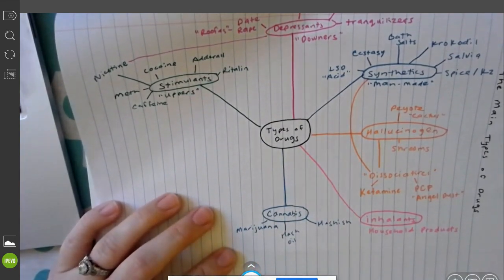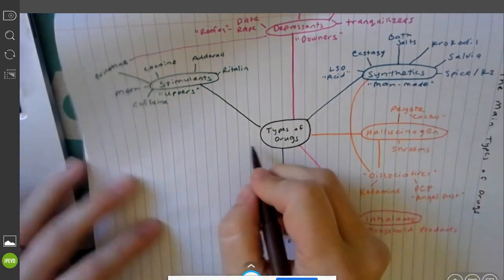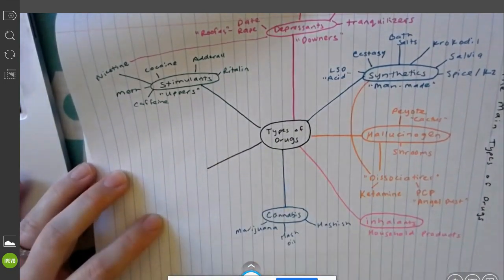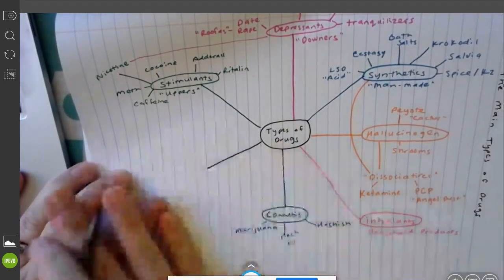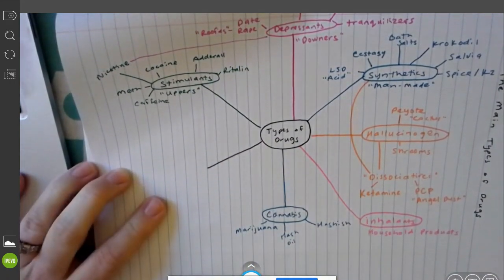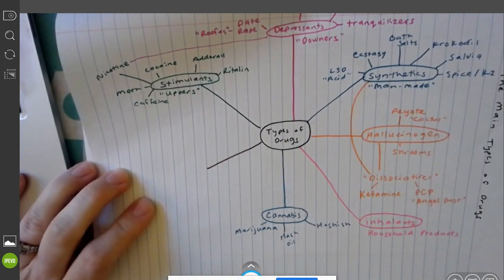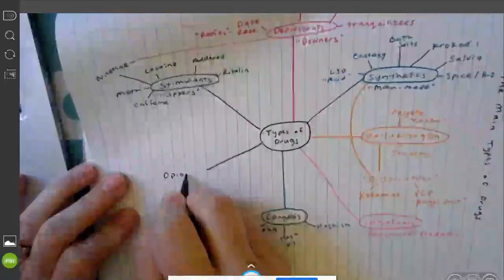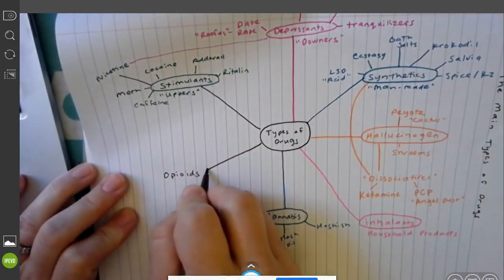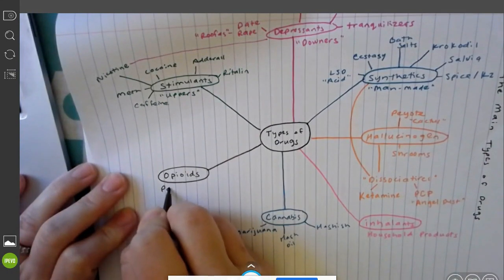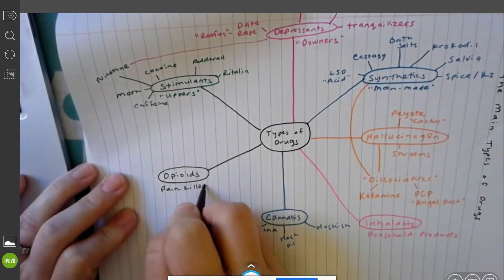And the last one we're going to go over is the most tragic and most common one at this point. The president actually called this, we know about pandemics right now, he called opioid use an epidemic which means it's a major problem plaguing our society. So I'm going to put opioids here.